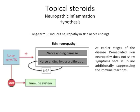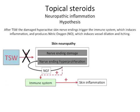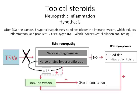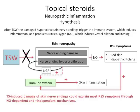However, the symptoms of this neuropathy won't be seen because, at the same time, topical steroids suppress the immune system. However, after topical steroid withdrawal, the damaged hyperactive skin nerve endings trigger the immune system, which induces inflammation and produces nitric oxide, which induces vessel dilatation and itching. In conclusion, topical steroid-induced damage of skin nerve endings could explain most of the red skin syndrome symptoms through nitric oxide-dependent and independent mechanisms.